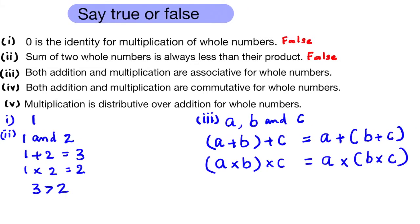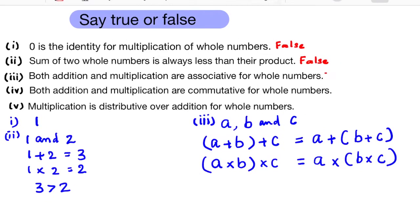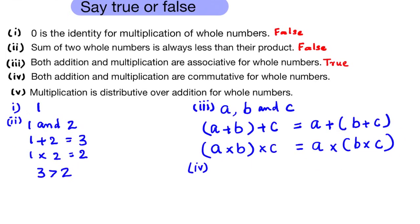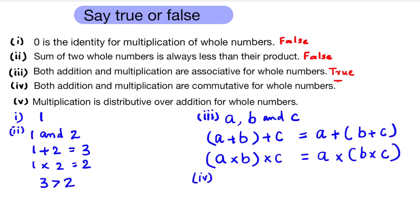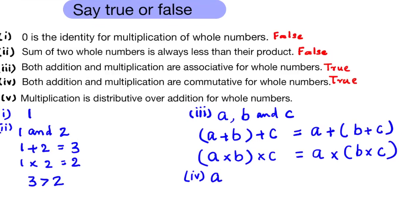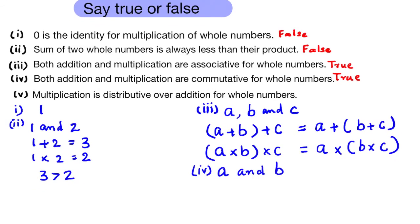So the statement — both addition and multiplication are associative for whole numbers — is true. Fourth question: Both addition and multiplication are commutative for whole numbers. True, because for any two whole numbers a and b: a + b = b + a.